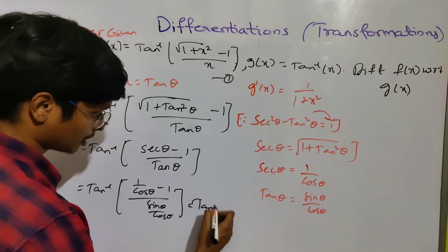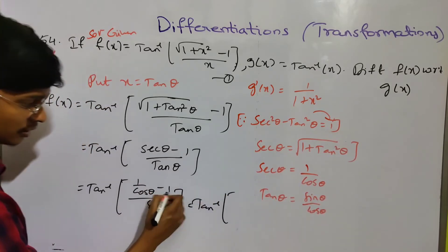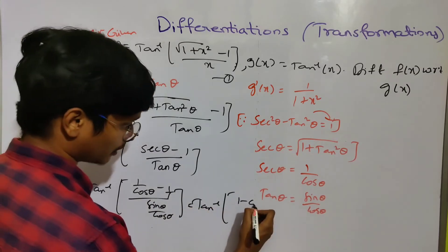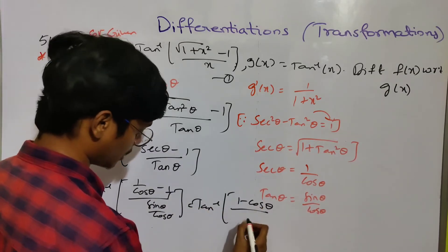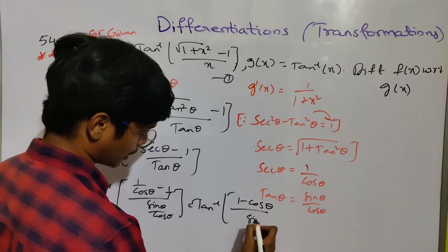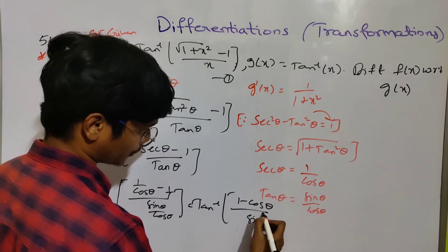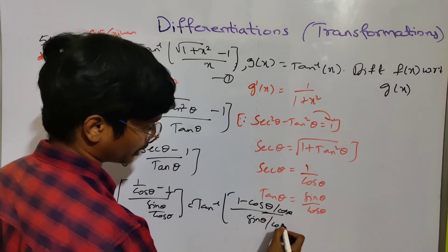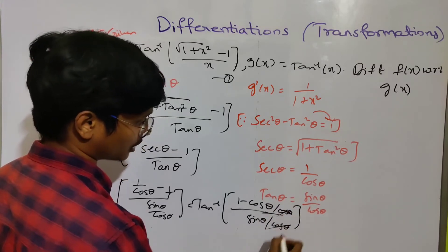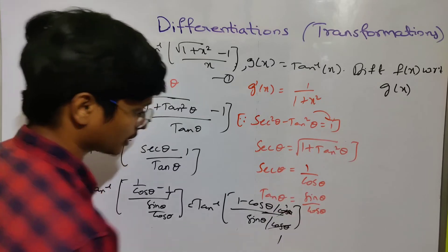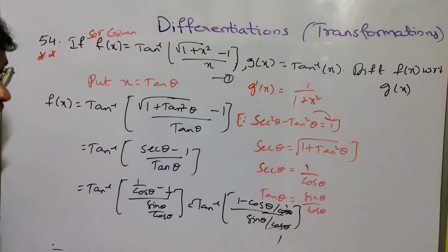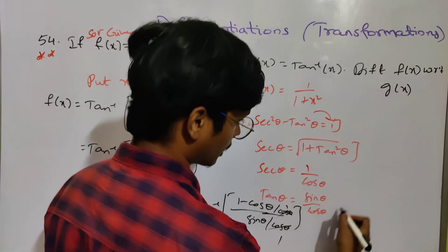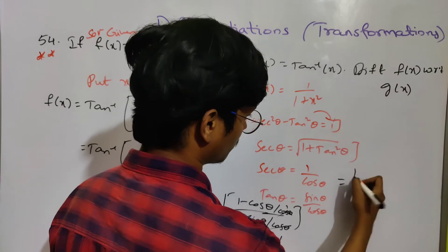So we get tan inverse of 1 by cos theta, minus 1, over sin theta by cos theta. This simplifies to tan inverse of 1 minus cos theta by sin theta.